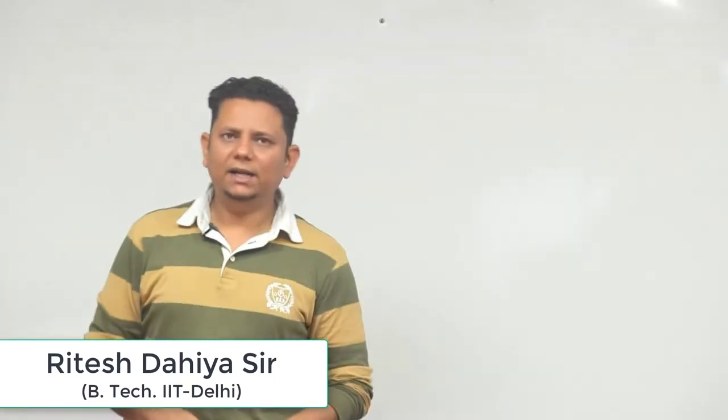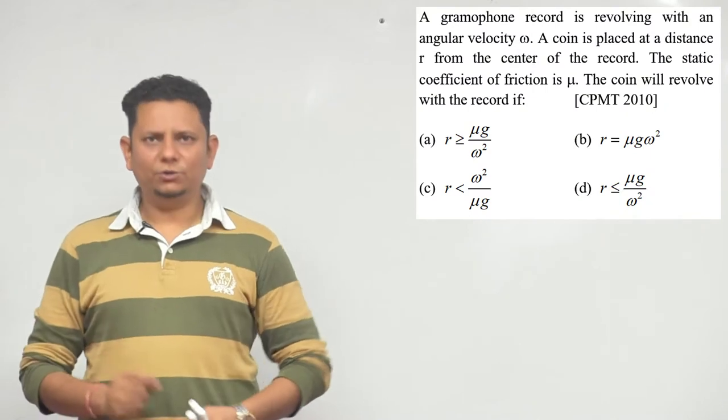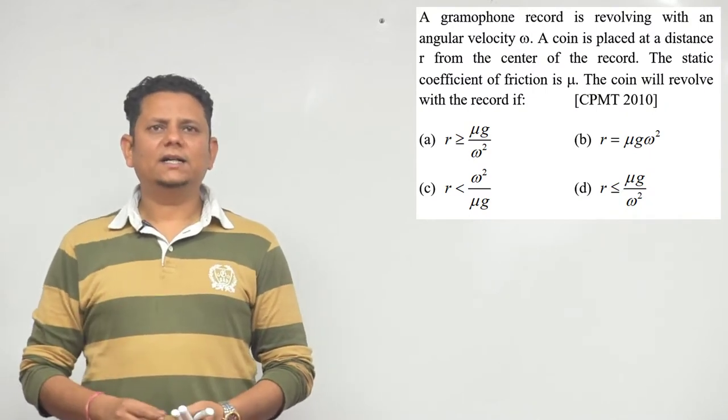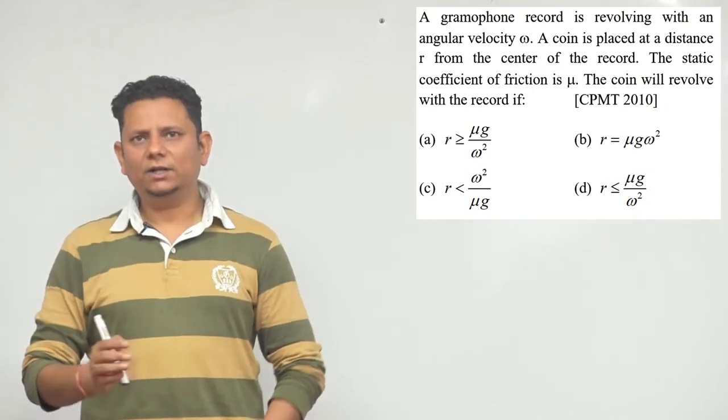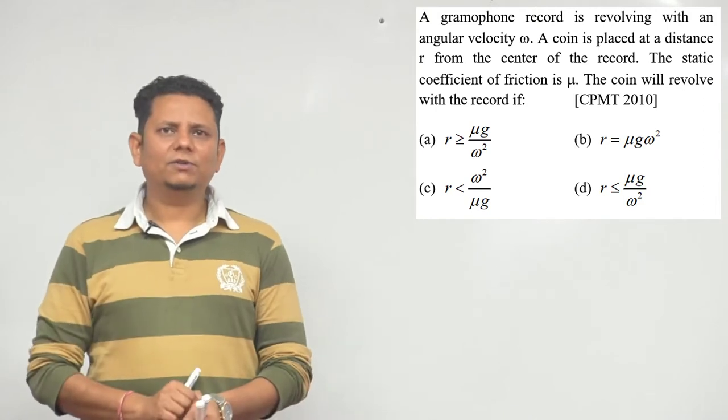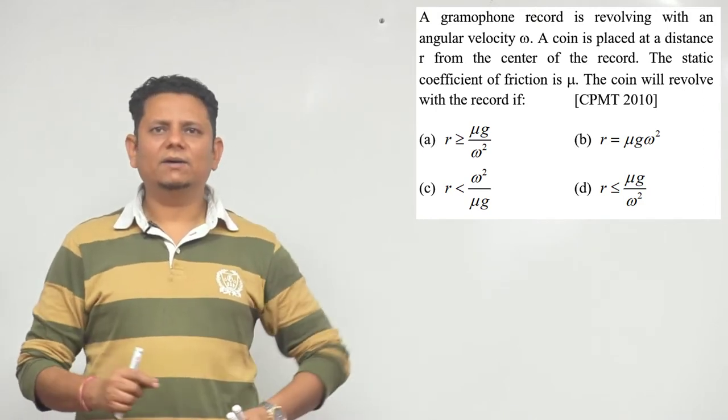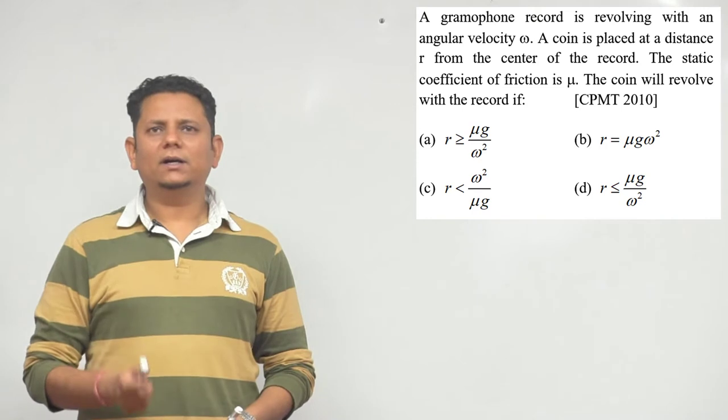Next question from 2010: A gramophone record is revolving with angular velocity omega. A coin is placed at a distance r from the center of the record. The static coefficient of friction is mu. The coin will revolve with the record if...